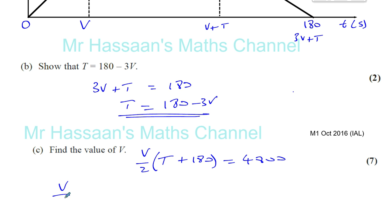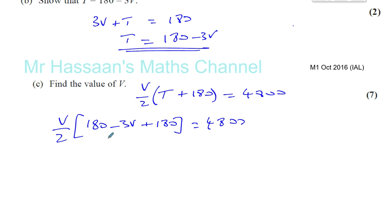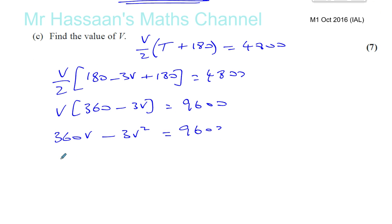Because we know that T is equal to 180 minus 3V. So we can write this T in terms of V. So let's first do that. We've got T is 180 minus 3V. So instead of T, I'm going to write V over 2 times 180 minus 3V plus 180 equals 4,800. So multiplying by 2, you'll have V times 360 minus 3V equals 9,600. So I just added these 180's together. And at the same time, I'll multiply both sides by 2. So you have 360 times V minus 3V squared equals 9,600.